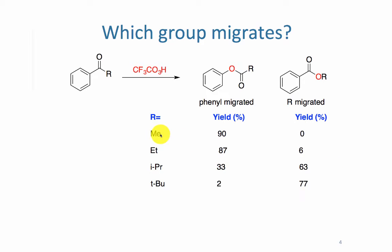One of the main things that we notice when we have a primary migrating group, like methyl or ethyl, we get almost exclusively phenyl migration and no R migration.